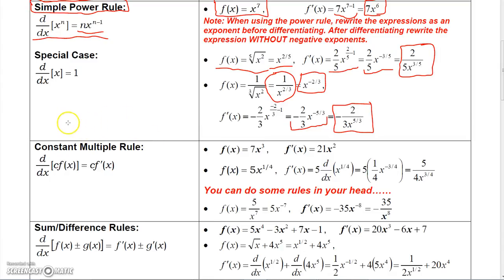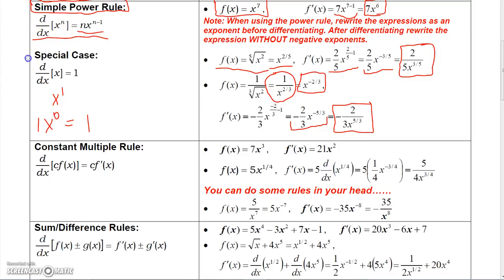One special case of the power rule is that the derivative of x is one. That's because x is x to the first. Applying the power rule gives one times x to the zero. Since x to the zero is one, one times one is just one. So if you take the derivative of x with respect to x, you get one.